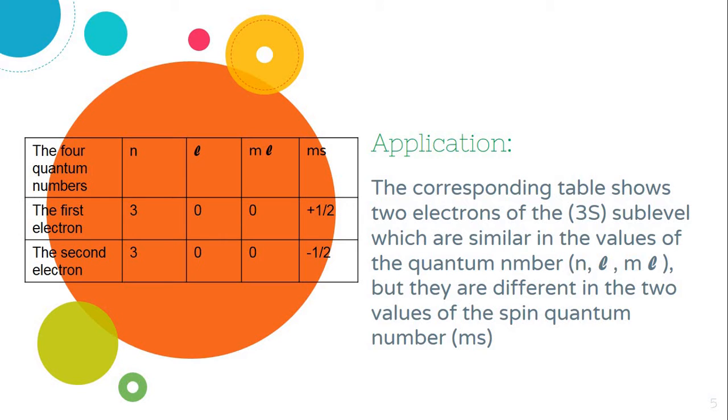How to apply this? The corresponding table shows the two electrons of the 3s sublevel, which are similar in the values of the quantum numbers n, ℓ, and mℓ. But they are different in the two values of the spin quantum number ms because they spin in the two opposite directions.